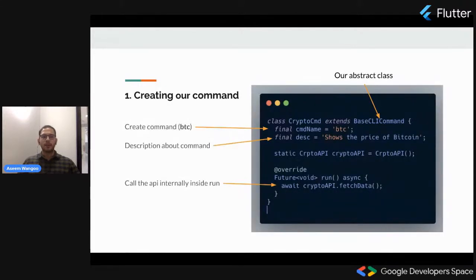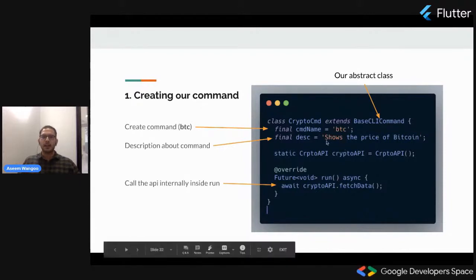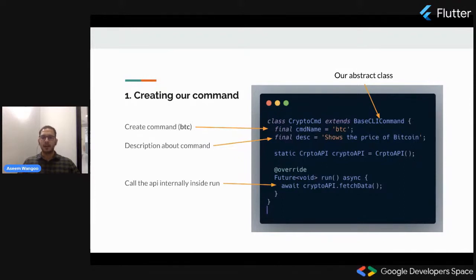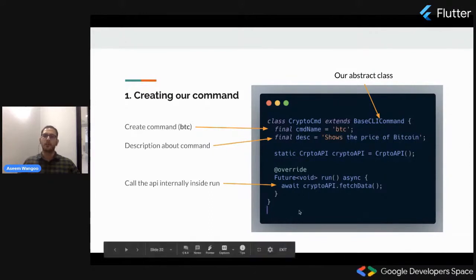The first step is creating our command. We have an abstract class called a base CLI command which specifies that you need a name for the command and a description, and a run method that needs to be overwritten by any class that extends it. Our crypto command extends this abstract class. We define our own command name as BTC, give it a description like 'shows the price of Bitcoin,' overwrite the run method, and inside that method the fetch data function calls the HTTP request to the CoinDesk API and gets back the data.